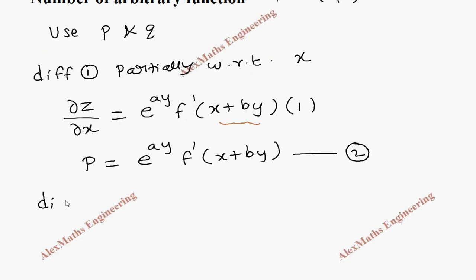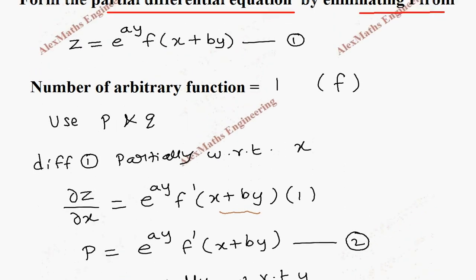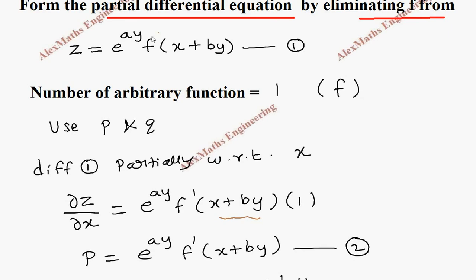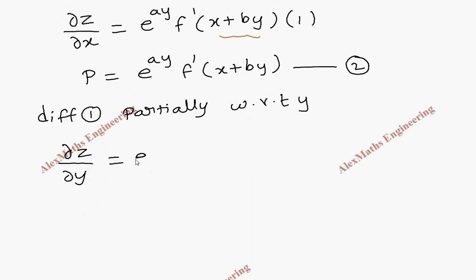The same way we are going to differentiate the first expression partially with respect to y. Now ∂z/∂y - we have product of two terms so we have to follow the product rule. So keep the first term as it is, e^(ay), and differentiate the second one, that is f'(x + by).